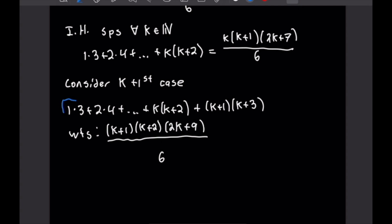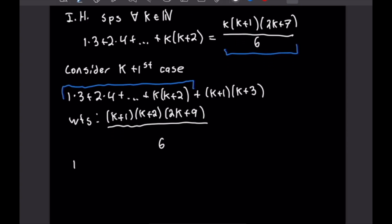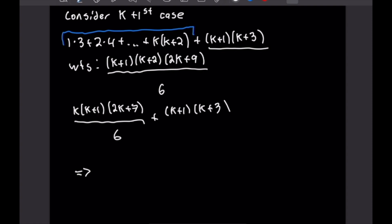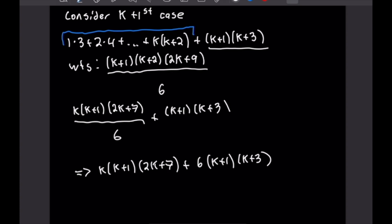We can apply our induction hypothesis and replace the entire sum up through k times k plus 2 with k times k plus 1 times 2k plus 7 all over 6, and then add k plus 1 times k plus 3. Now we want to combine these two terms, so we'll multiply the right term by 6 over 6 and we'll get k times k plus 1 times 2k plus 7 plus 6 times k plus 1 times k plus 3, all over 6.